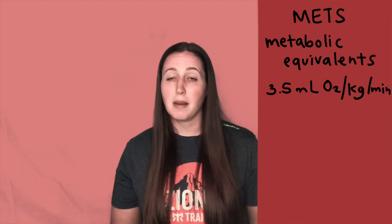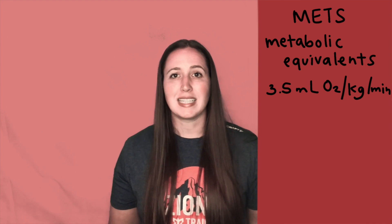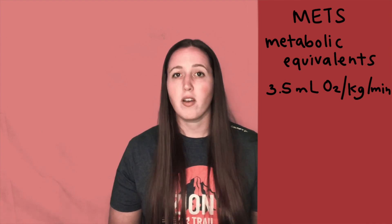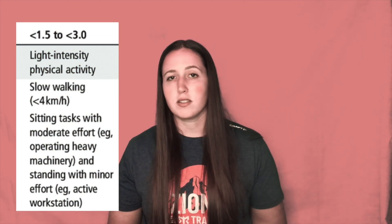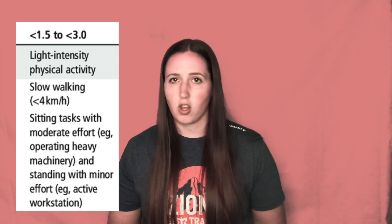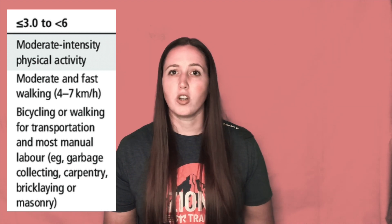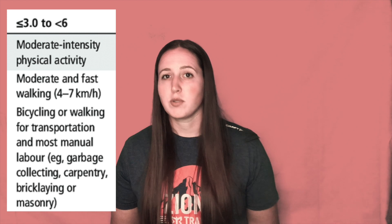METs are metabolic equivalents, which is the amount of energy it takes your body to sit still, or 3.5 milliliters of oxygen per kilogram of body weight per minute. 1 to 2 METs is very light activity — sitting still, driving, a really slow walk. 3 to 6 METs is more moderate activity, anywhere from a slightly faster walk to cooking, gardening, all the way up to biking 12 miles per hour.